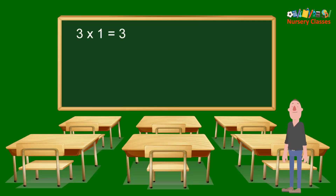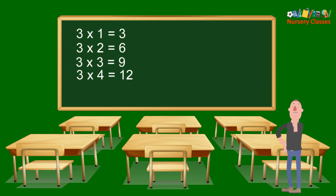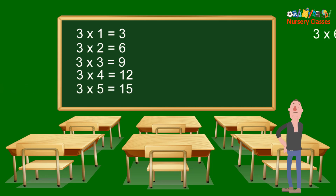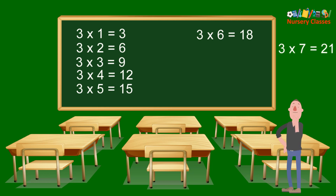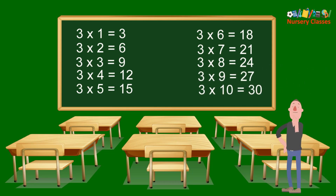3×1 equals 3, 3×2 equals 6, 3×3 equals 9, 3×4 equals 12, 3×5 equals 15, 3×6 equals 18, 3×7 equals 21, 3×8 equals 24, 3×9 equals 27, 3×10 equals 30.